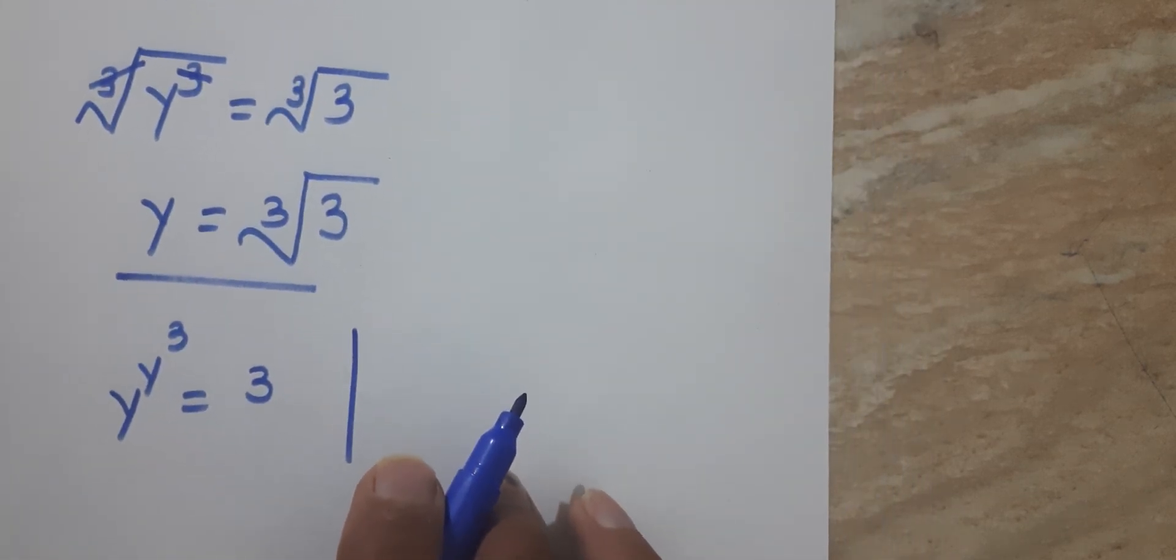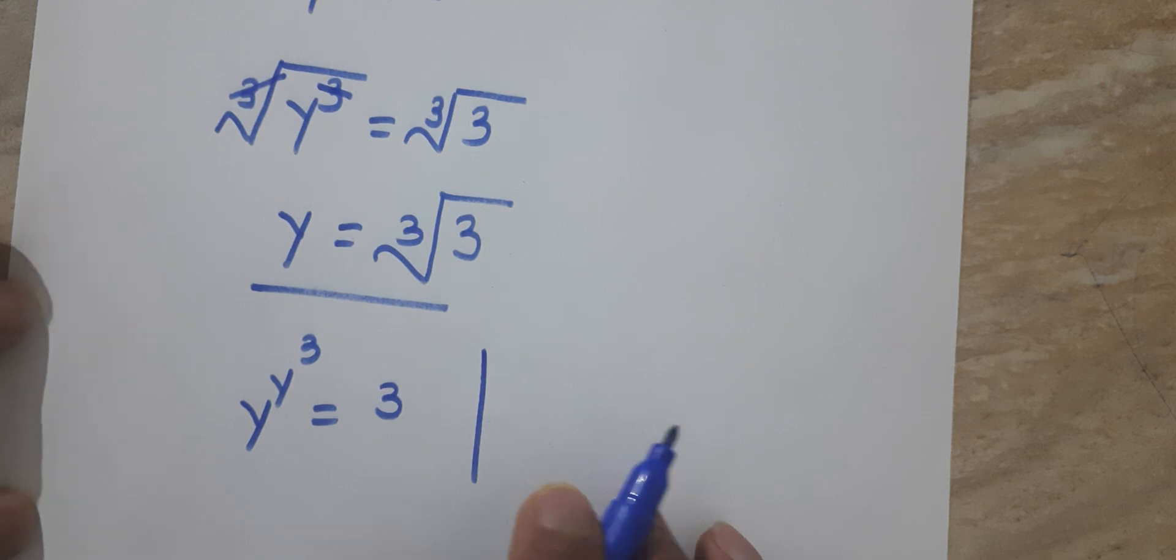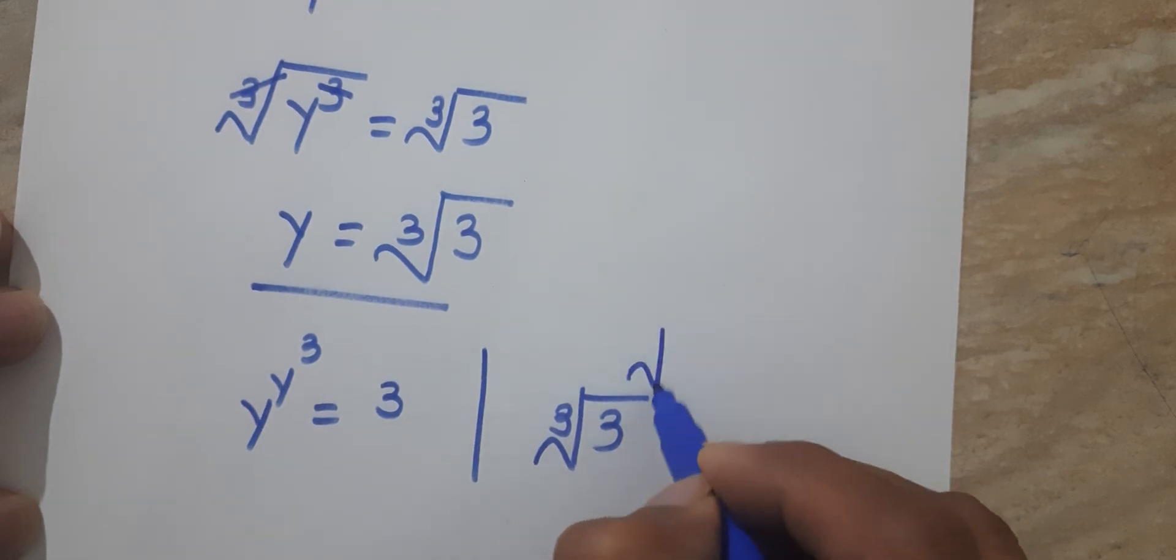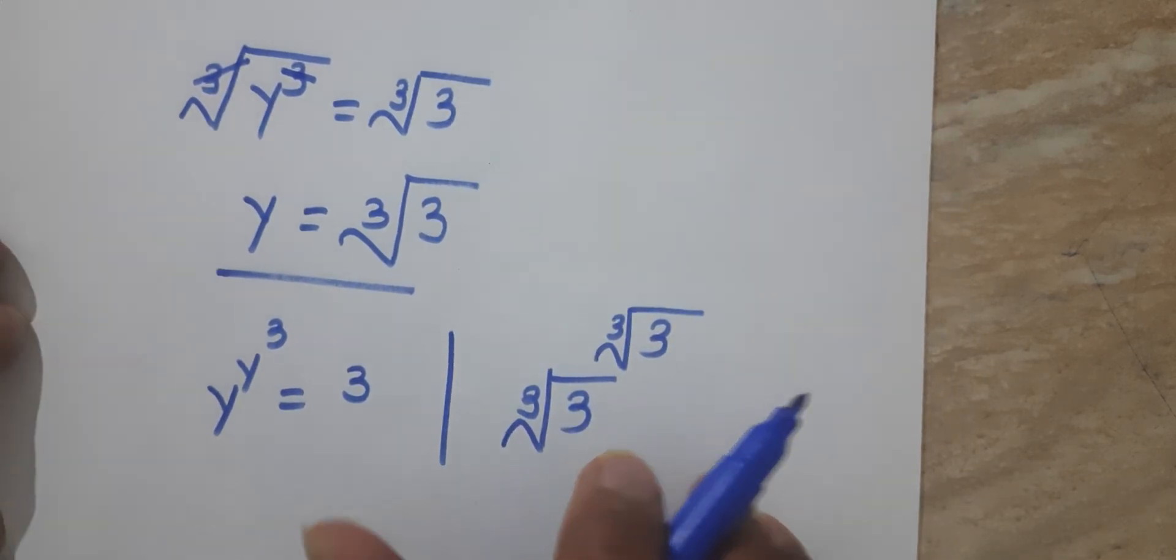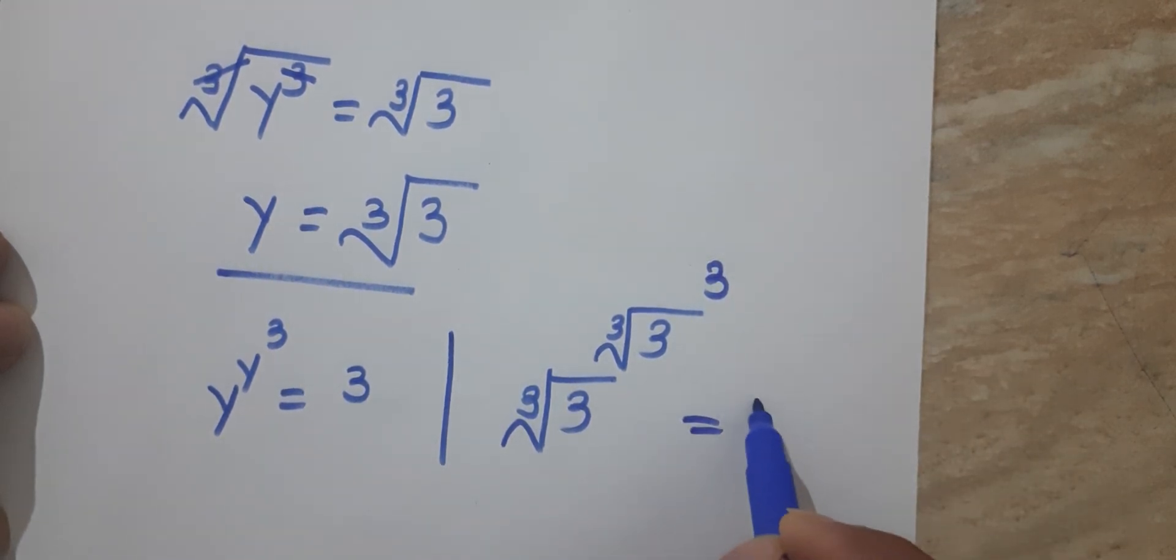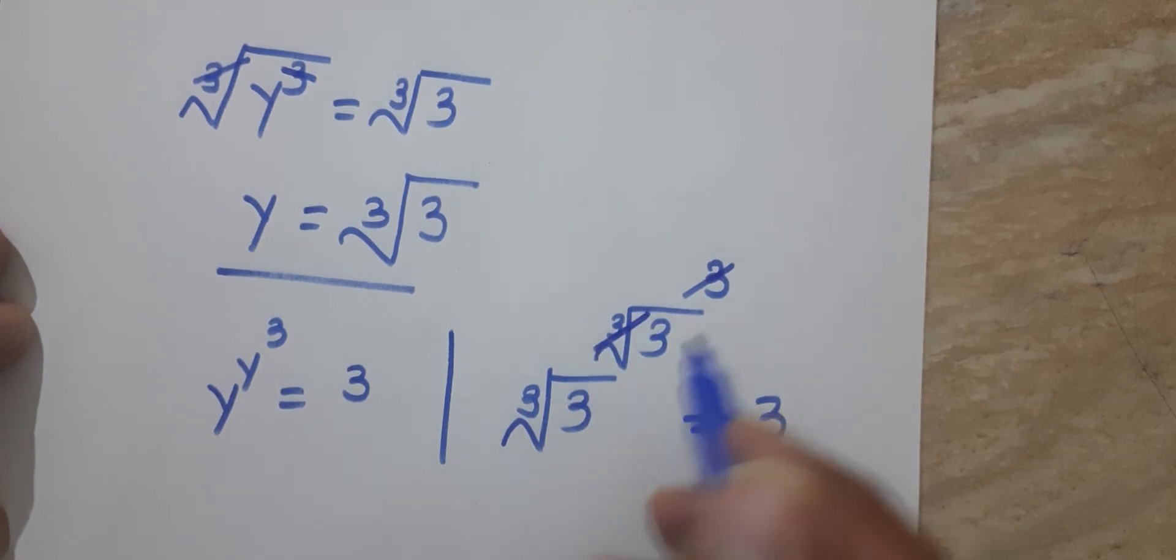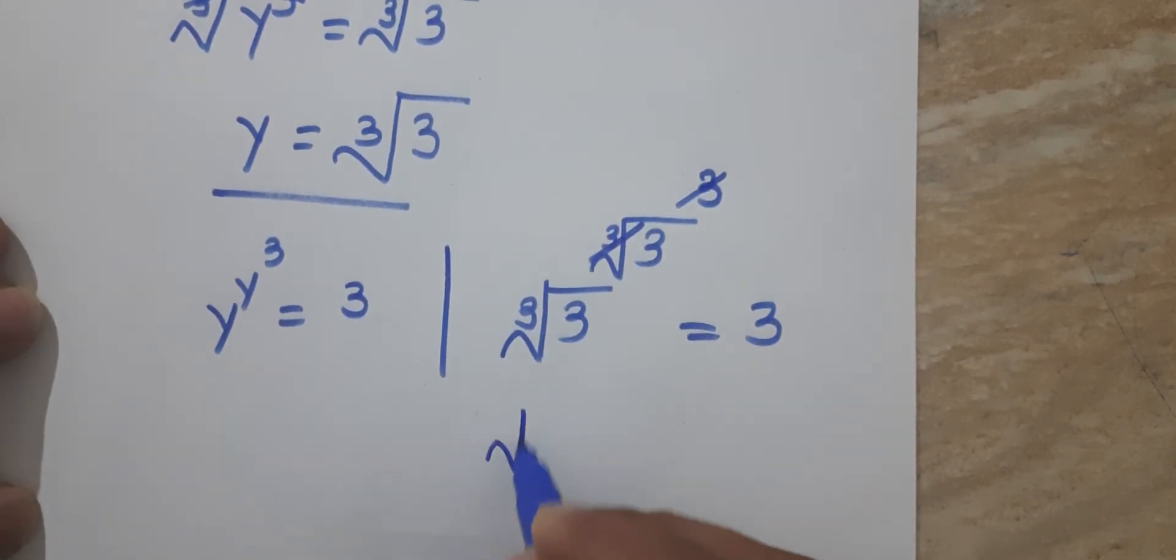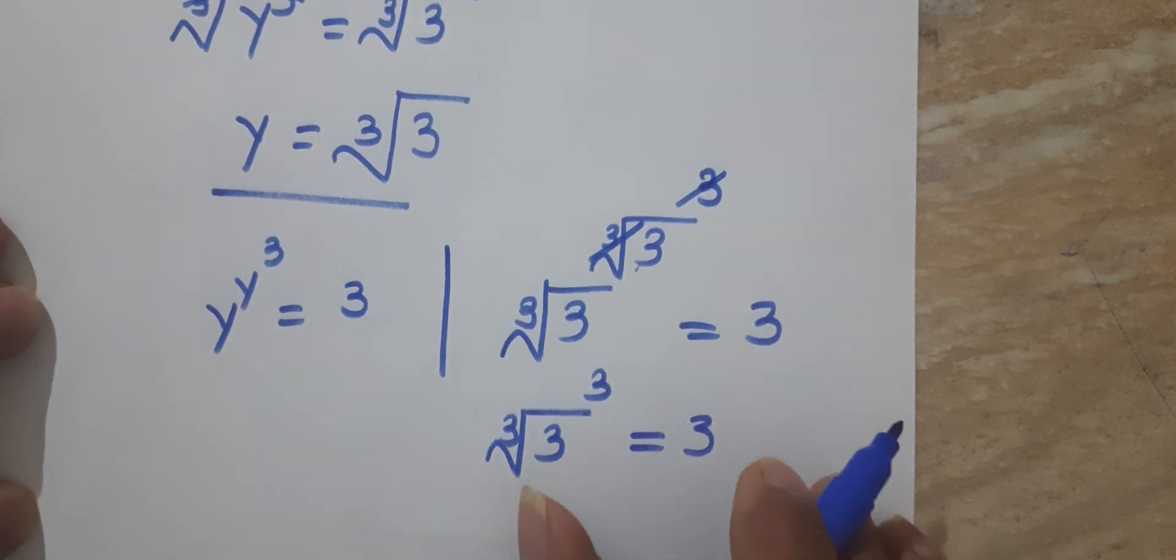It will become (³√3)^((³√3)³) = 3. We can remove this power 3 and this cube root. So we have (³√3)³ = 3.